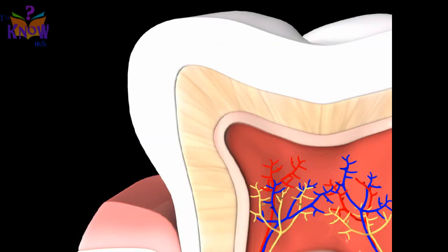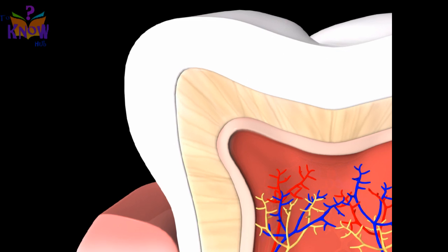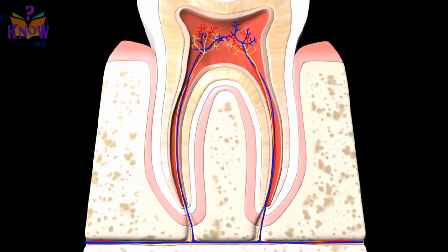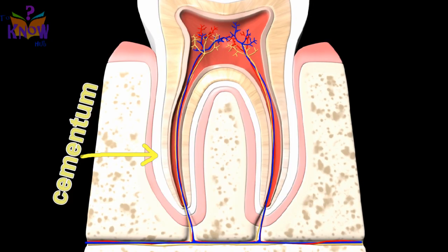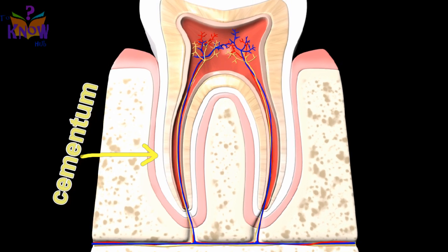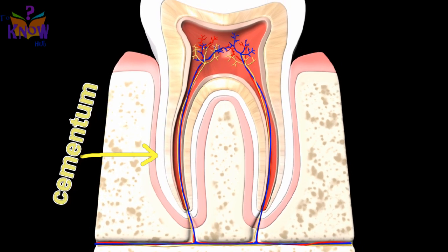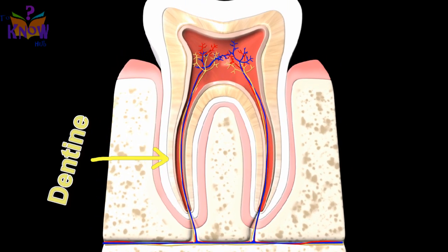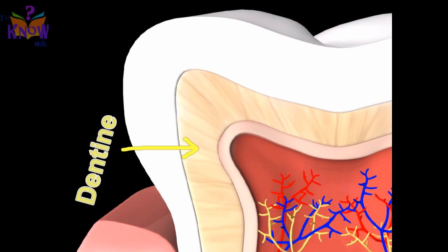The hard layer that protects the crown is the enamel. It is the hardest part of our body. The hard outer layer in the root part is called cementum. Below this outer layer lies dentine, which supports the enamel.